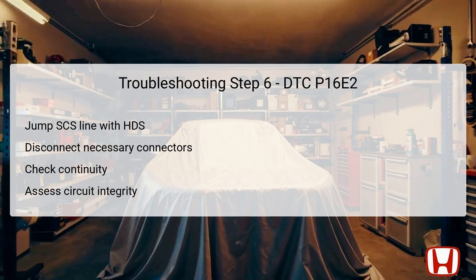Once again, begin by jumping the SCS line with the HDS, allowing access to diagnostic capabilities for further testing. Following this, disconnect the required connectors — namely the alternator 1P connector along with PCM connector B (49P). Ensure test conditions are aligned to avoid inaccuracies. Assess continuity between designated test points: from PCM connector B, pin 16 (tan), to alternator 1P connector, pin 1 (tan). If continuity persists, it indicates the LIN wire is intact, and further action may involve updating the PCM software or substituting with a known good unit. A lack of continuity suggests an open in the LIN wire that requires focused repair before finalizing the diagnostics.